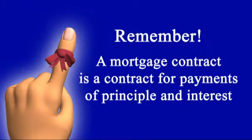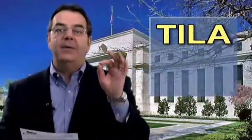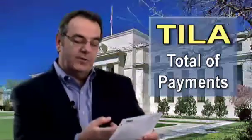When you put somebody into a mortgage contract, it is a contract for payments of principal and interest. A 30-year loan means 360 payments; a 15-year loan means 180 payments of principal and interest. The Truth in Lending Disclosure lets the borrower know how many payments they're committing to and shows them the total of payments over the life of the loan, if the borrower makes every single payment as contracted on the note.